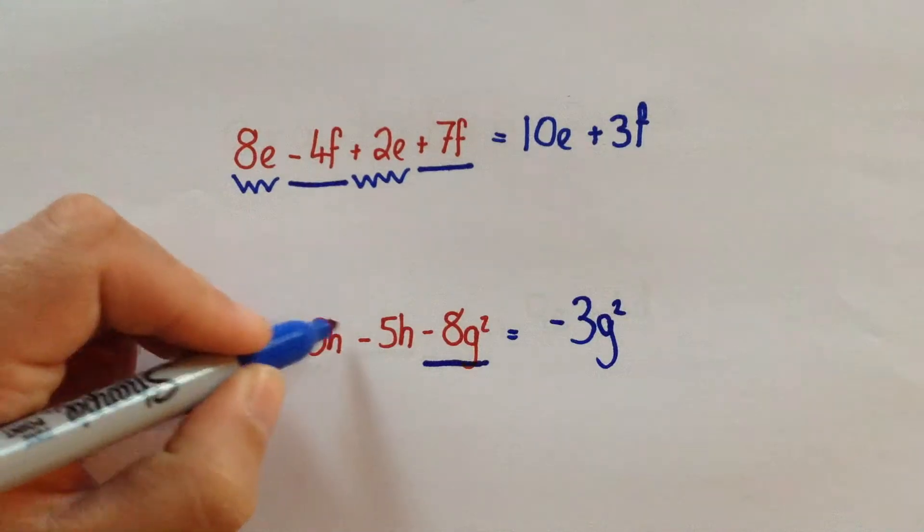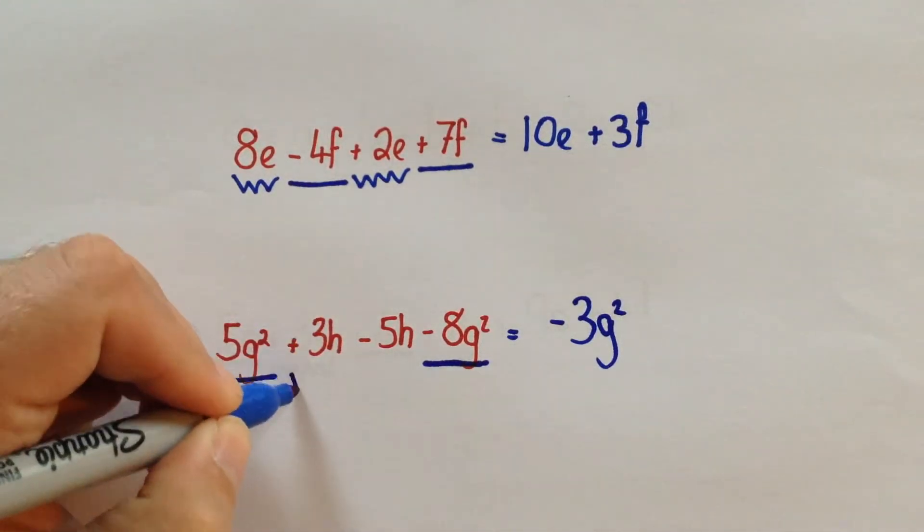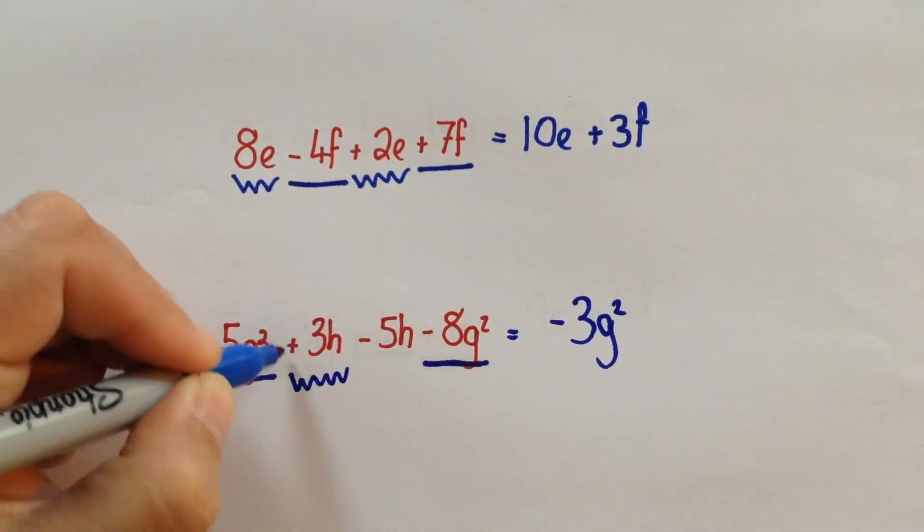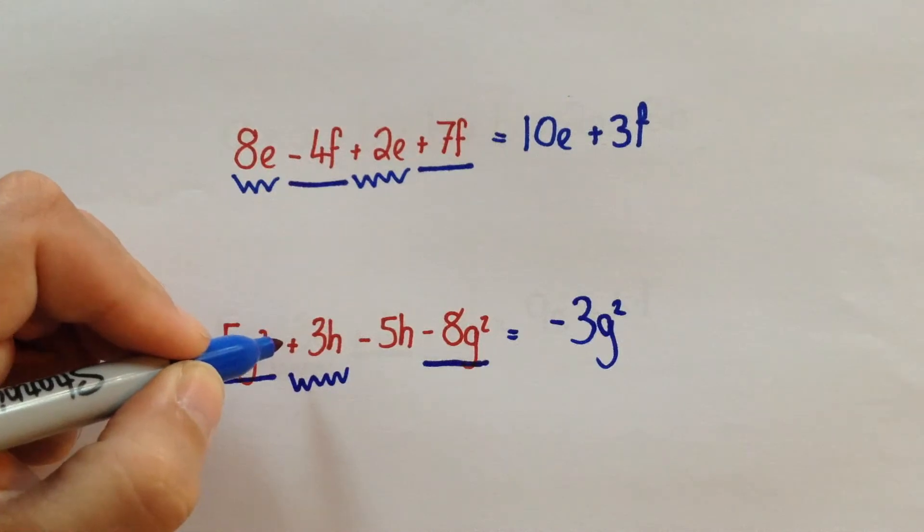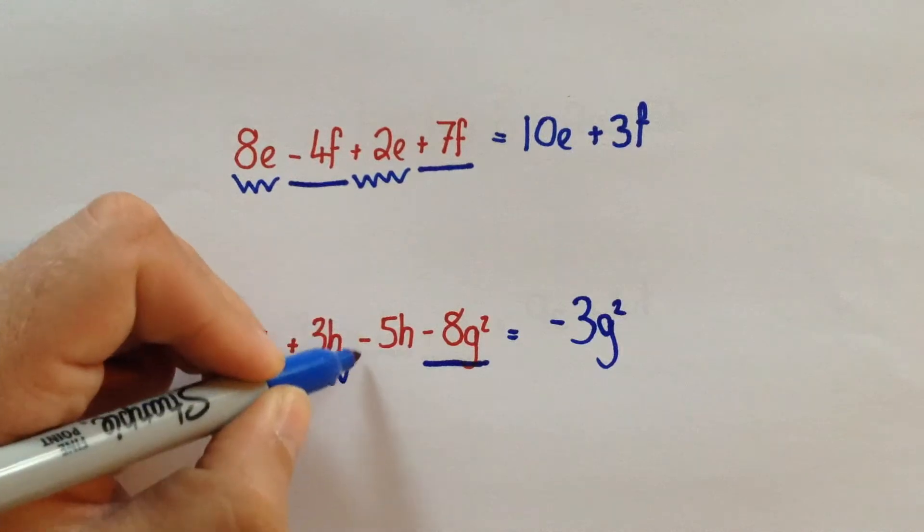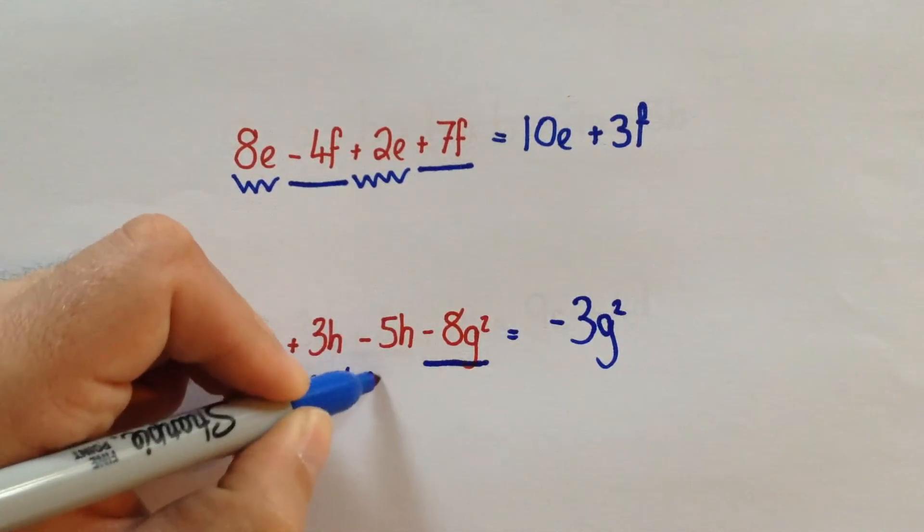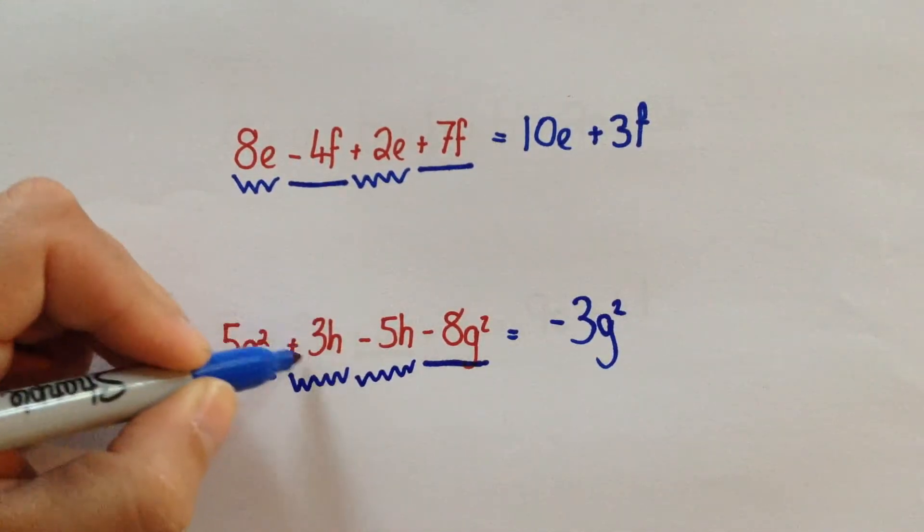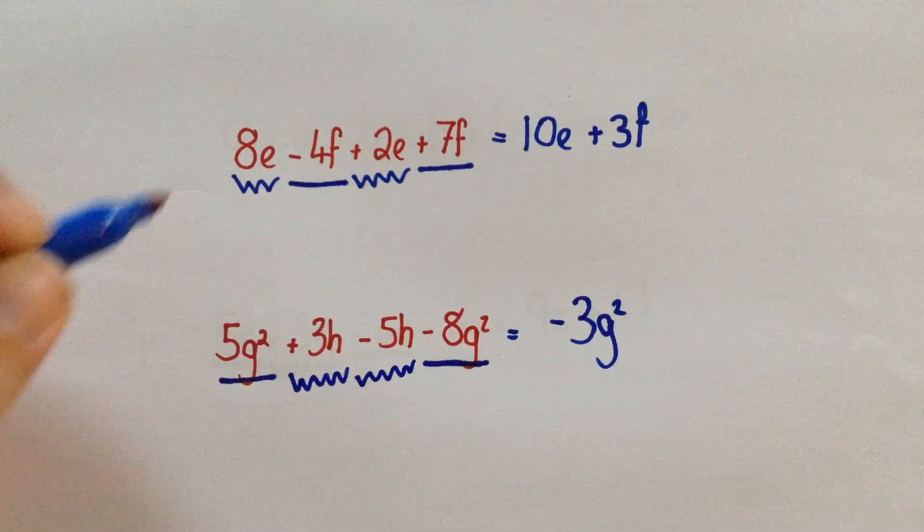For the second part, we look at the H's. Here, we have got positive 3H. So if you imagine, again, starting on a number line at positive 3, and then taking away 5. So 3 take away 5 is minus 2. So we would have minus 2H.